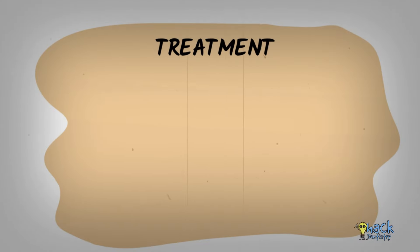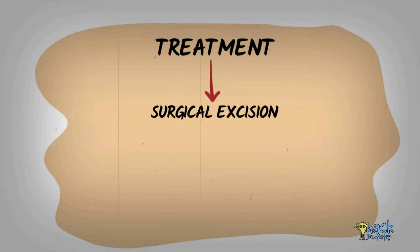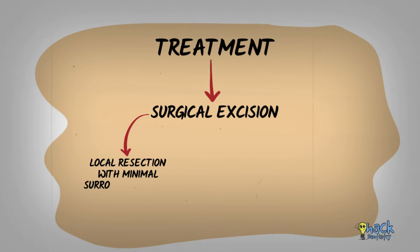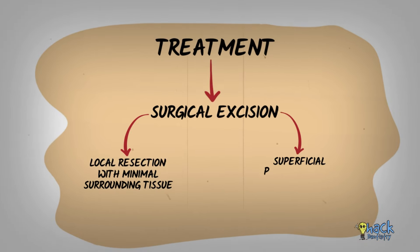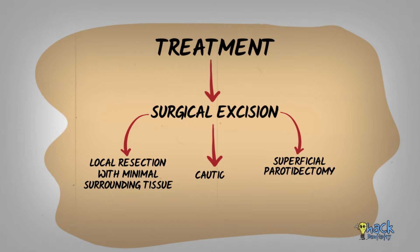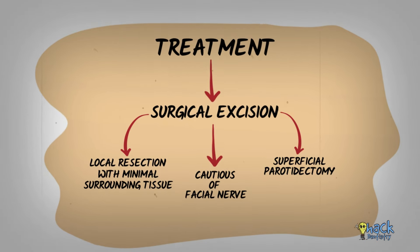Surgical excision of the tumour is the treatment of choice, accomplished by local resection with minimal surrounding tissue, while some others prefer superficial parotidectomy. Surgical removal is usually accomplished easily and without damage to the facial nerve, due to the superficial location of the tumour.